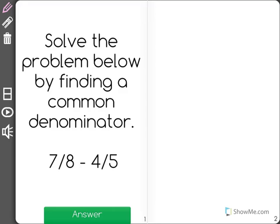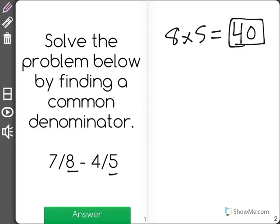Solve the problem below by finding a common denominator: 7/8 minus 4/5. The way I'm going to do that, a simple way, is to multiply the two denominators. 8 times 5 is 40. I know that 40 will be a factor for both of them.